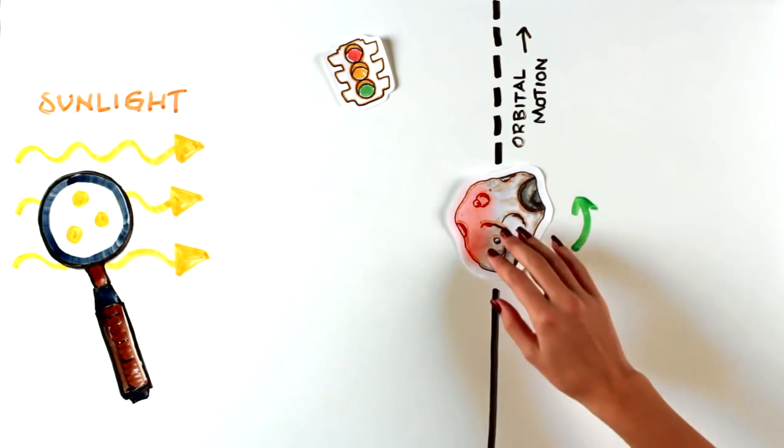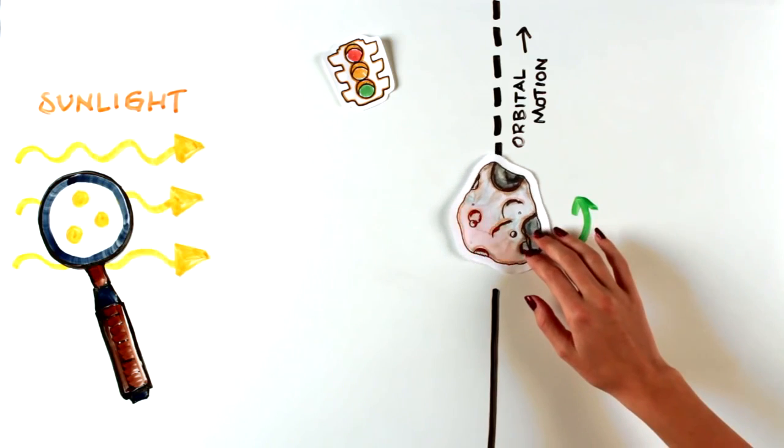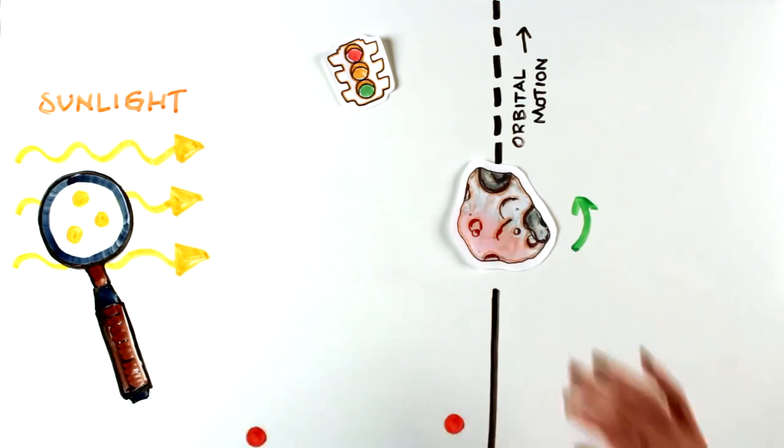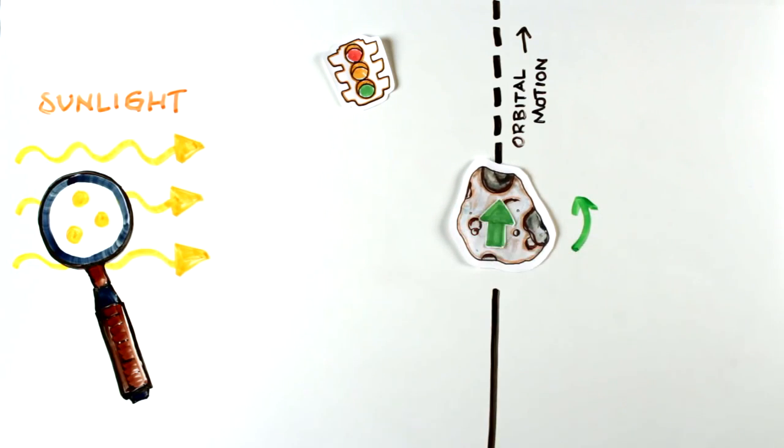But, if the asteroid is spinning the other way, the warmest spot will be slightly behind, and the recoil force will give the asteroid a push forward in its orbit, like a car hitting the gas.